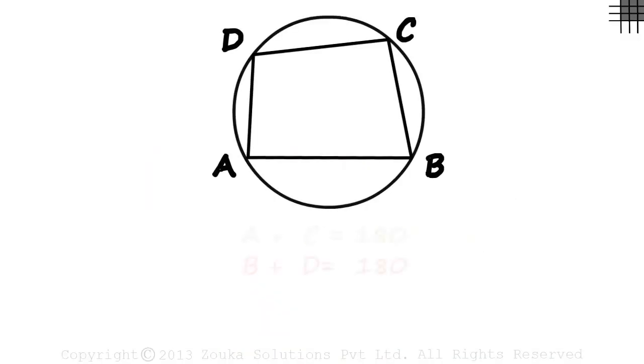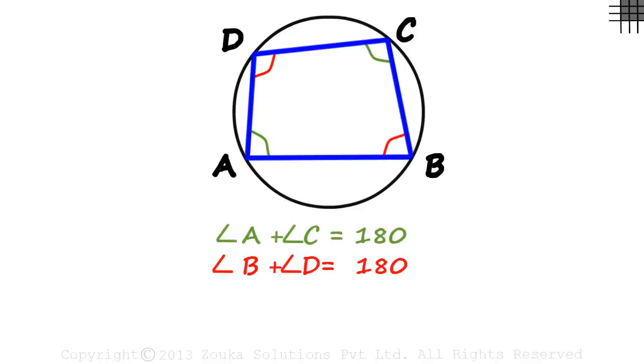We have seen that the opposite angles of a cyclic quadrilateral add up to 180 degrees. A quadrilateral is cyclic when a circle passes through all its four vertices.